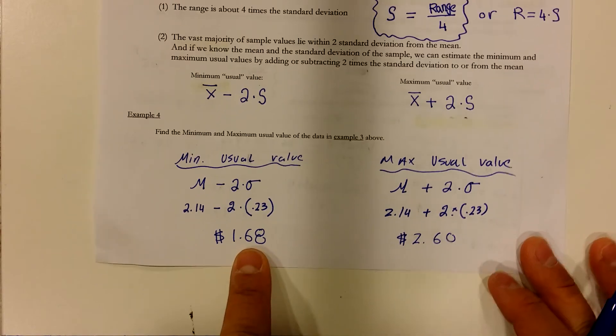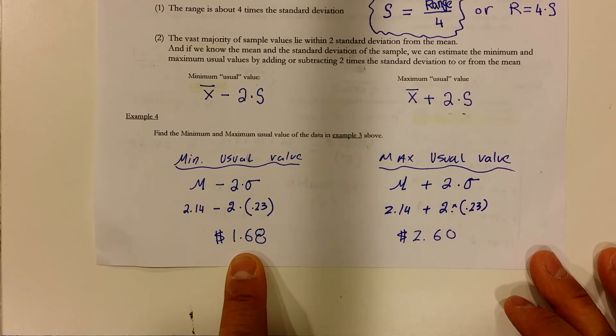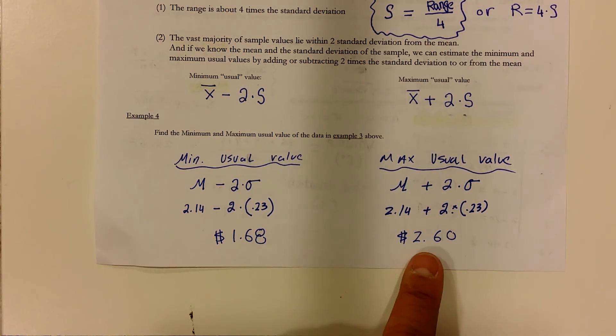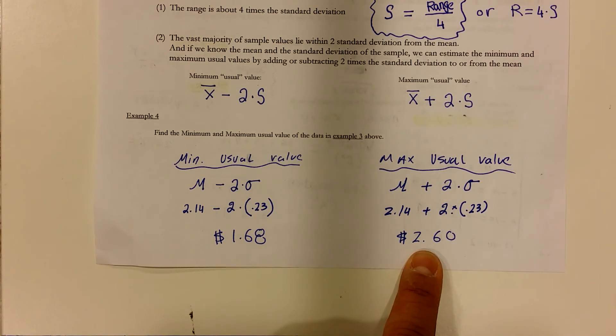However, if you pay less than $1.68, that would be unusual. Which means that you got a really good deal. If you pay more than $2.60, that's considered to be unusual. And that means in this case, you just got ripped off.